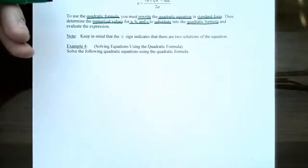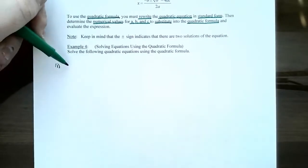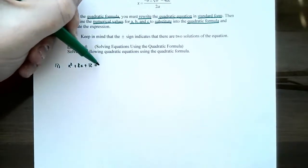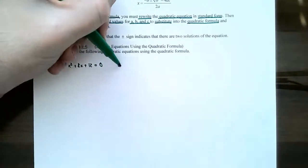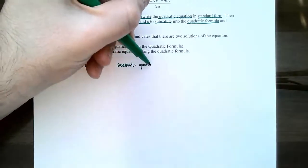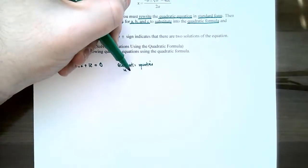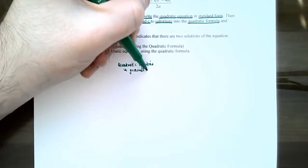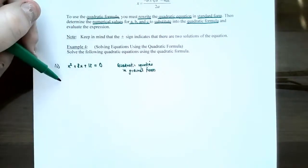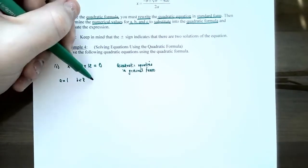Example four, number one: solve x squared plus 8x plus 12 equals zero. Notice this is a quadratic equation, and it is already in general form, so we don't need to simplify at all. We can identify the coefficients directly: a is 1 (the coefficient of x squared), b is 8, and c is 12. The quadratic formula can now be used to solve this equation.